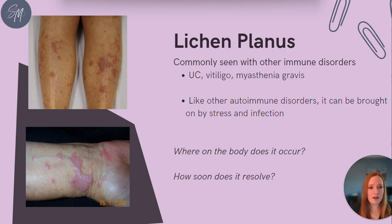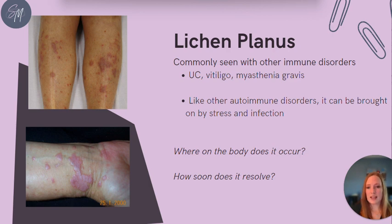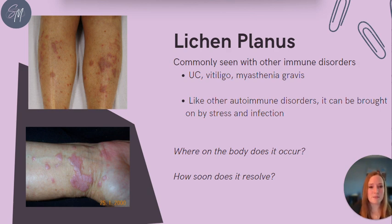So where on the body does lichen planus typically occur? This is a helpful way to differentiate it from the other lichen skin disorders. It is usually seen on the flexor surfaces of the limbs, and can occur on the skin, the mouth, or even the genitals. Lichen planus can vary in presentation as seen in these pictures from the National Health Service and Primary Care Dermatology Society. On the skin itself, it typically presents as reddish-purple, flat-topped bumps that are pretty itchy. Some lesions actually have a more lacy and white appearance if they are on the mucous membrane specifically.